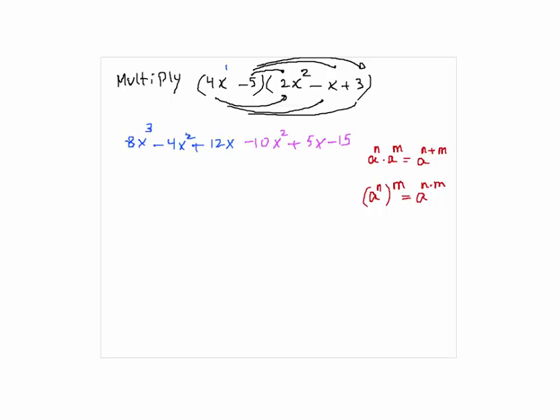And then next step is to combine like terms. So here we have 8x to the power of 3. Then now we can go ahead and add all the ones with the second exponents. Minus 4x to the power of 2, minus 10x to the power of 2. That adds up to what?